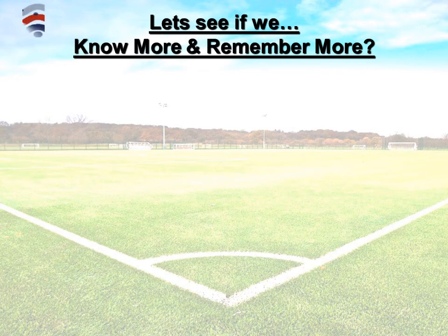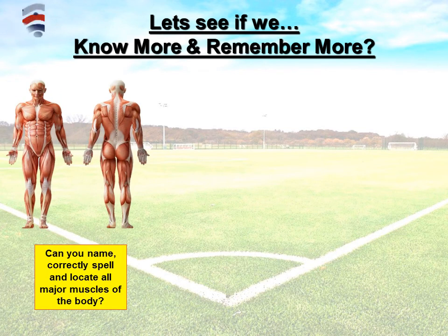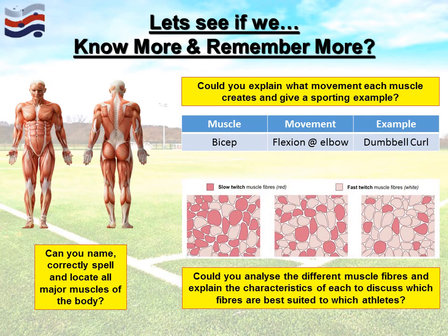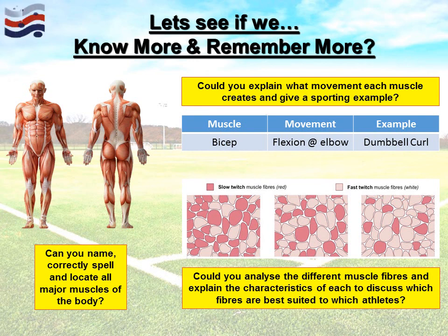Let's see if you now know and remember more. Could you correctly name, spell and locate all the major muscles of the body? Could you complete a table showing all the different muscles, the movement they allow, and give a sporting example? And could you analyse an image to determine three different types of muscle fibres, explain the characteristics of each, and discuss which fibres are best suited to which athletes? Please go back through the video to make sure you're familiar with all the different areas so that when the task is released, you're ready to perform well. Thank you very much for listening — stay safe and hopefully we'll see you shortly.